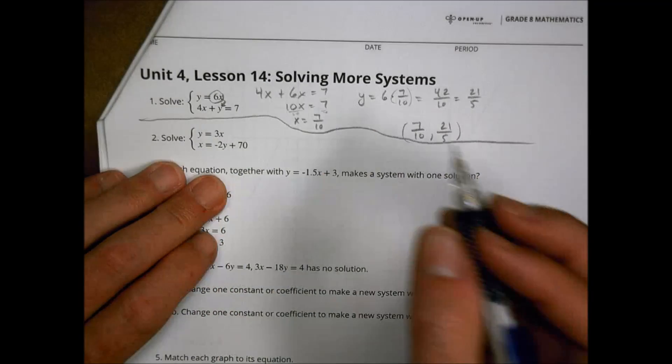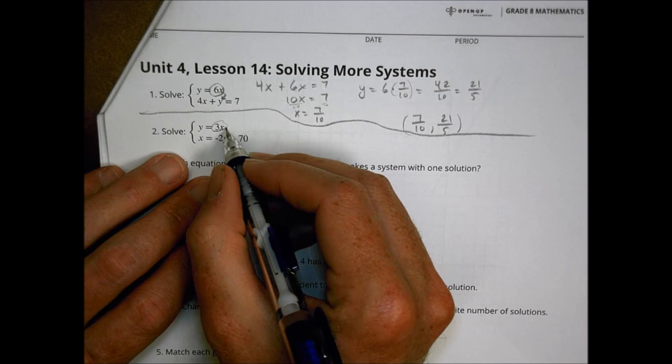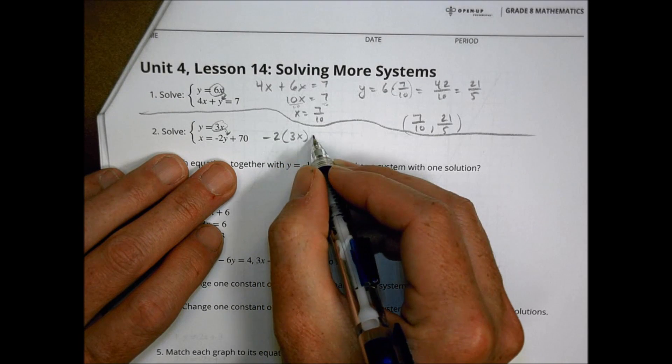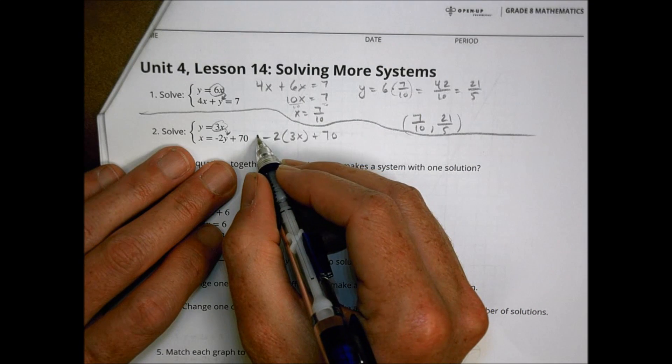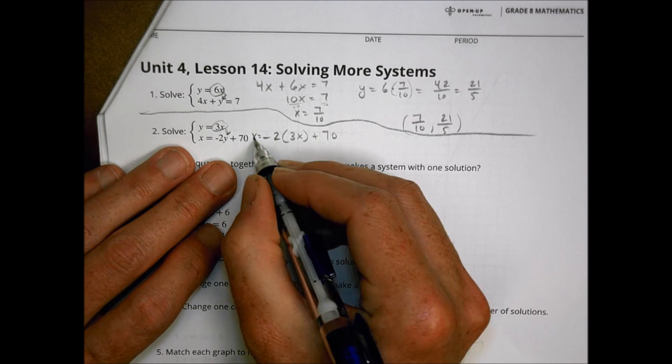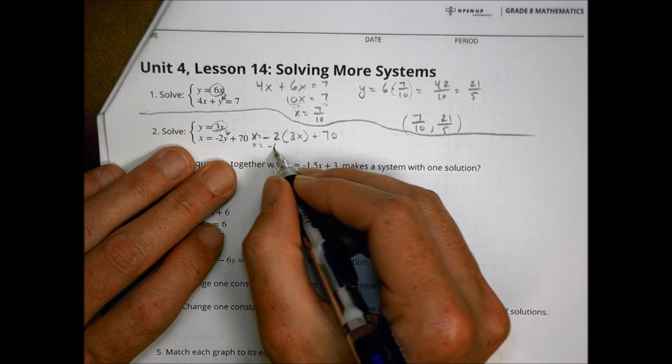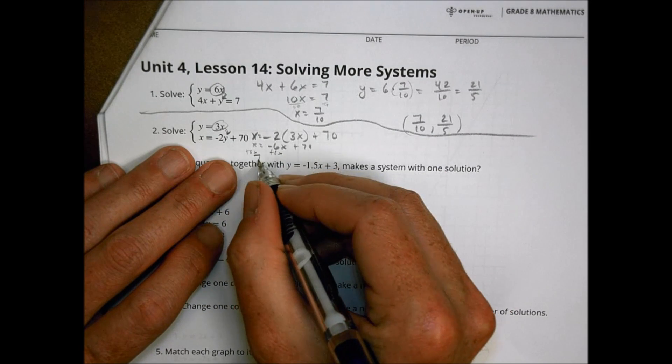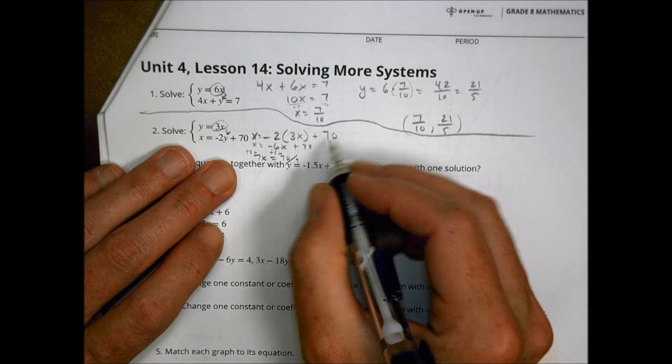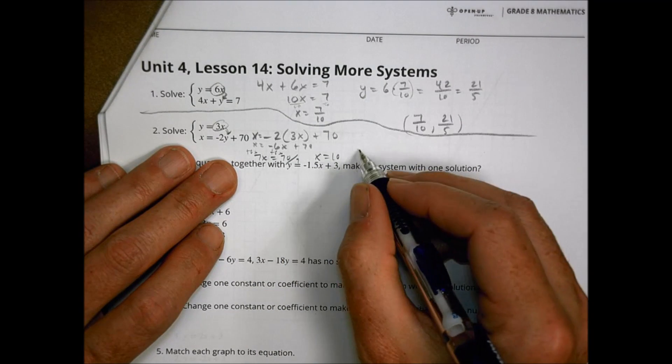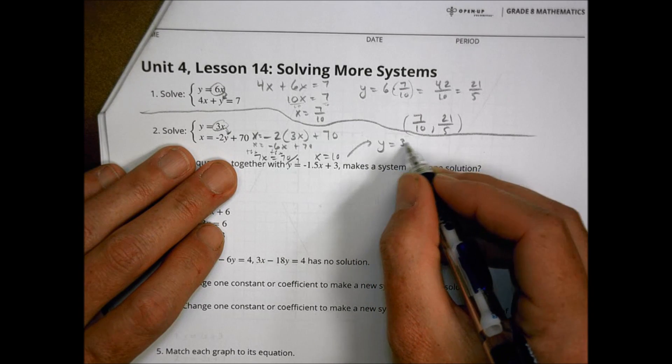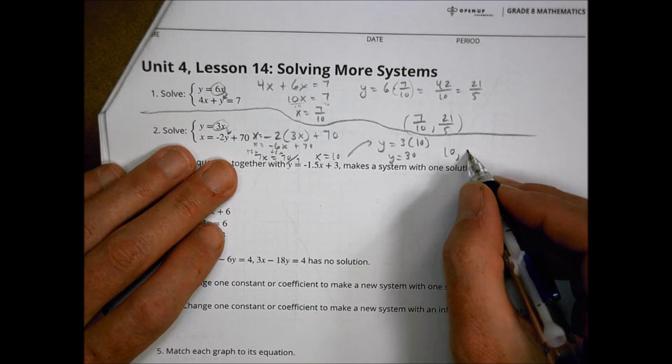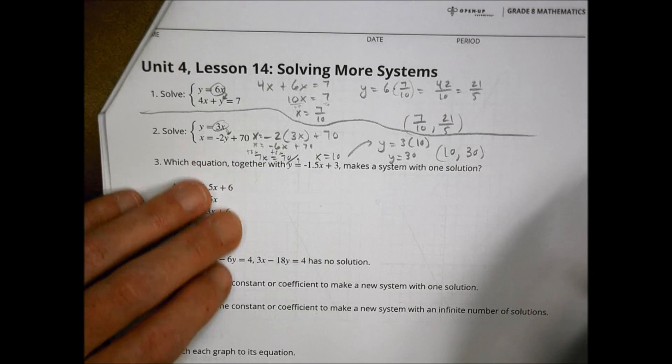For number 2, again, still using substitution, we're going to plug in 3x right there for y. So we have negative 2 times 3x plus 70, and that all equals x. So x equals all of that. So x now equals negative 6x plus 70. We add 6x to both sides. So 7x equals 70 divided by 7, and we find that x equals 10. I'm going to plug that back into our equation. Y equals 3 times x, which we said was 10, which becomes 30 for our value of y, making our solution 10 comma 30.